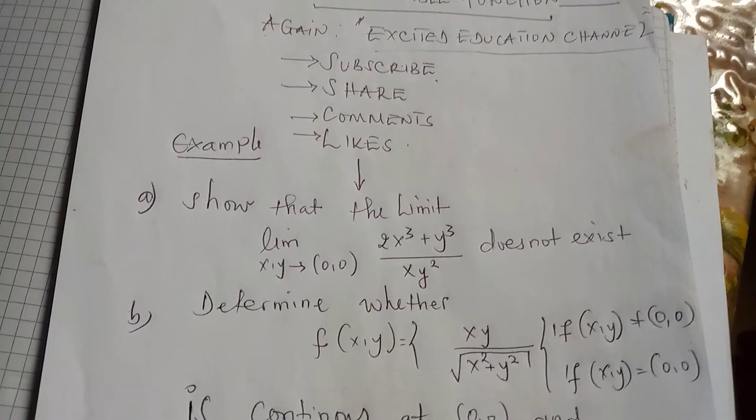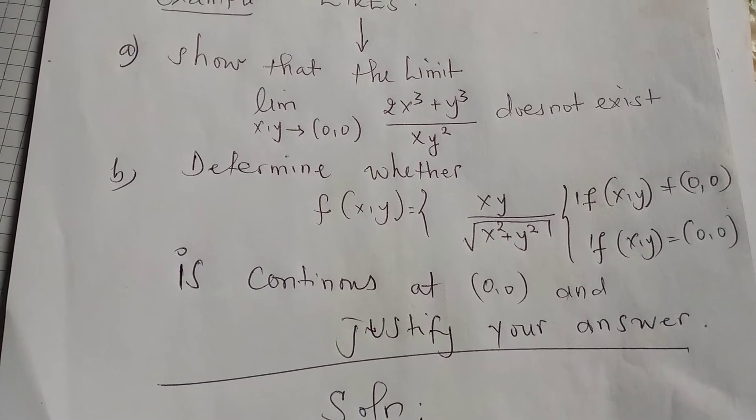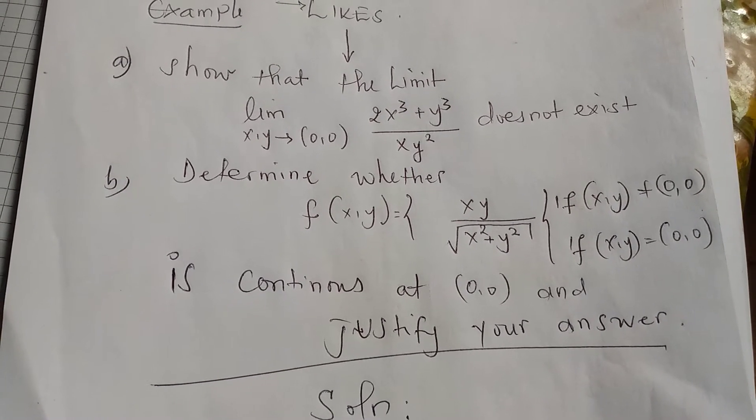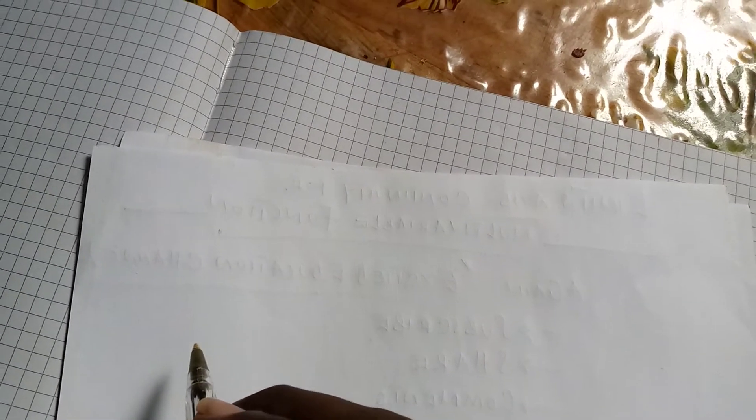Please take a moment to note this question. For Part A, we need to show that the limit as (x,y)→(0,0) of (x³ + y³)/(xy²) does not exist.